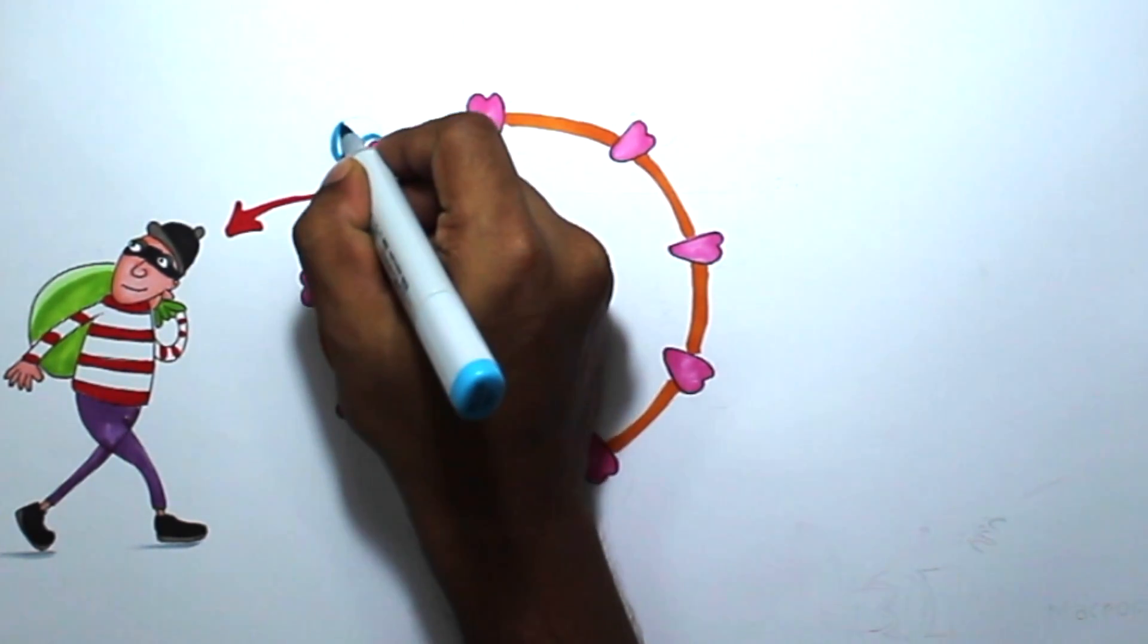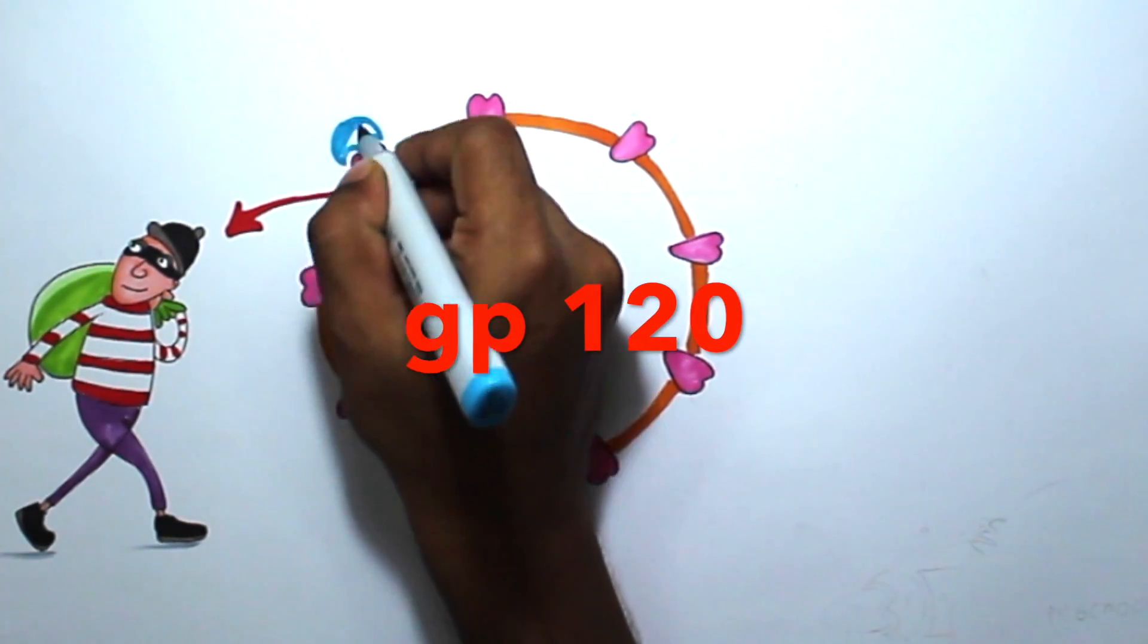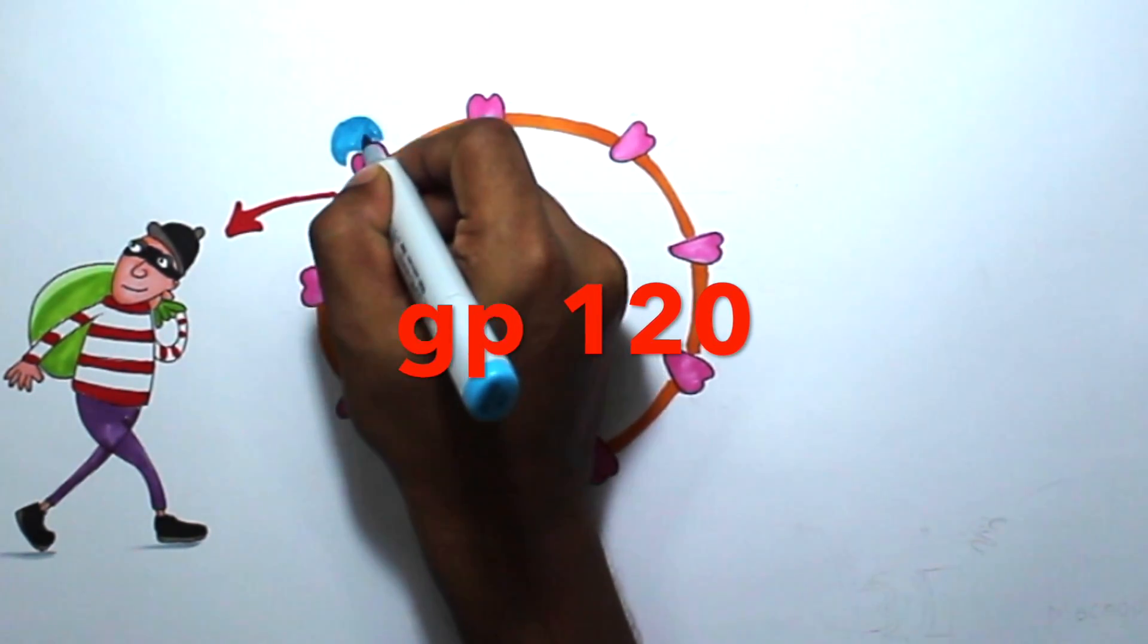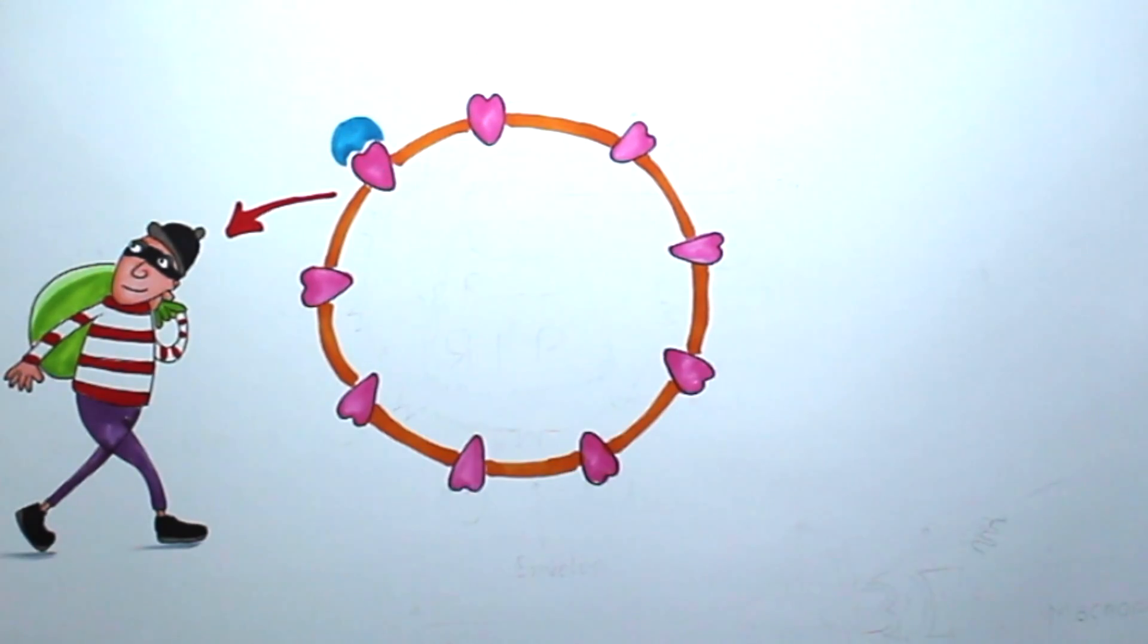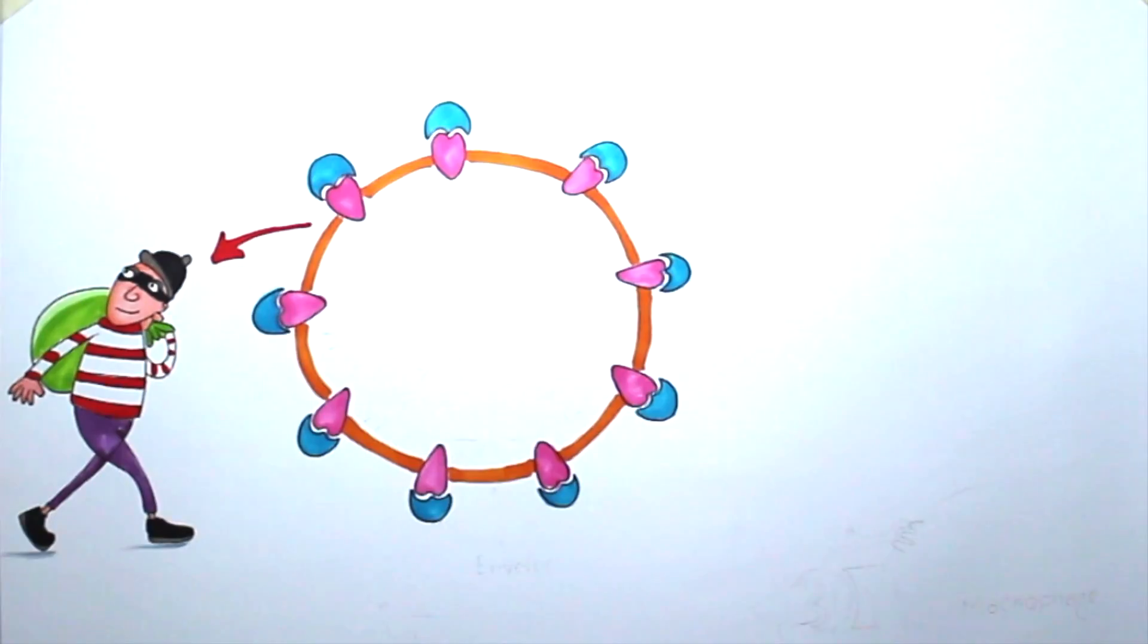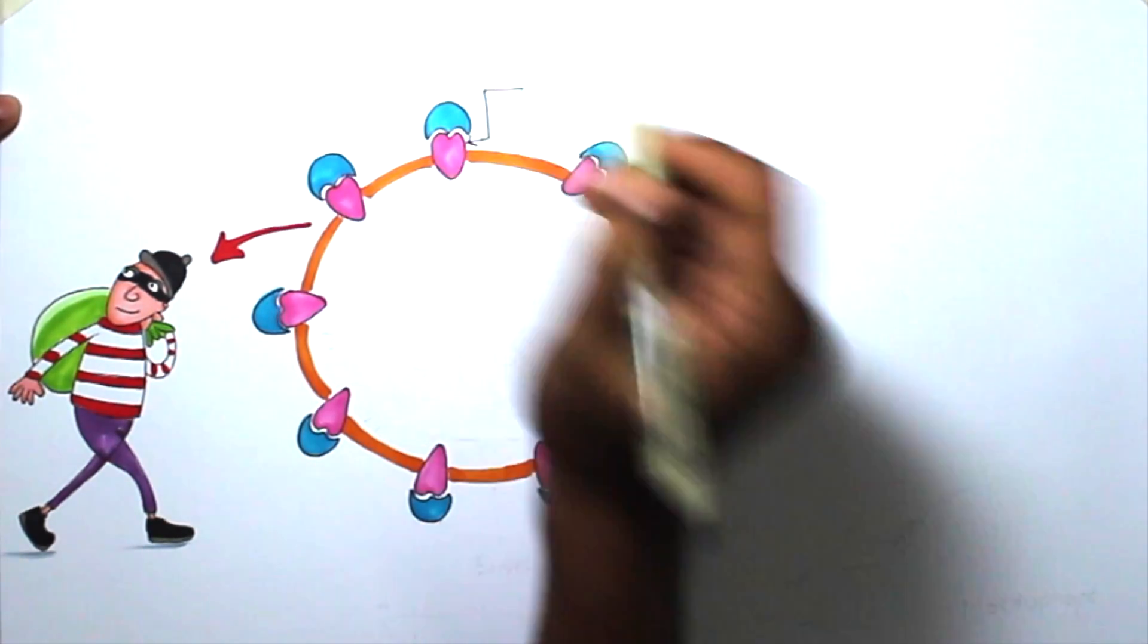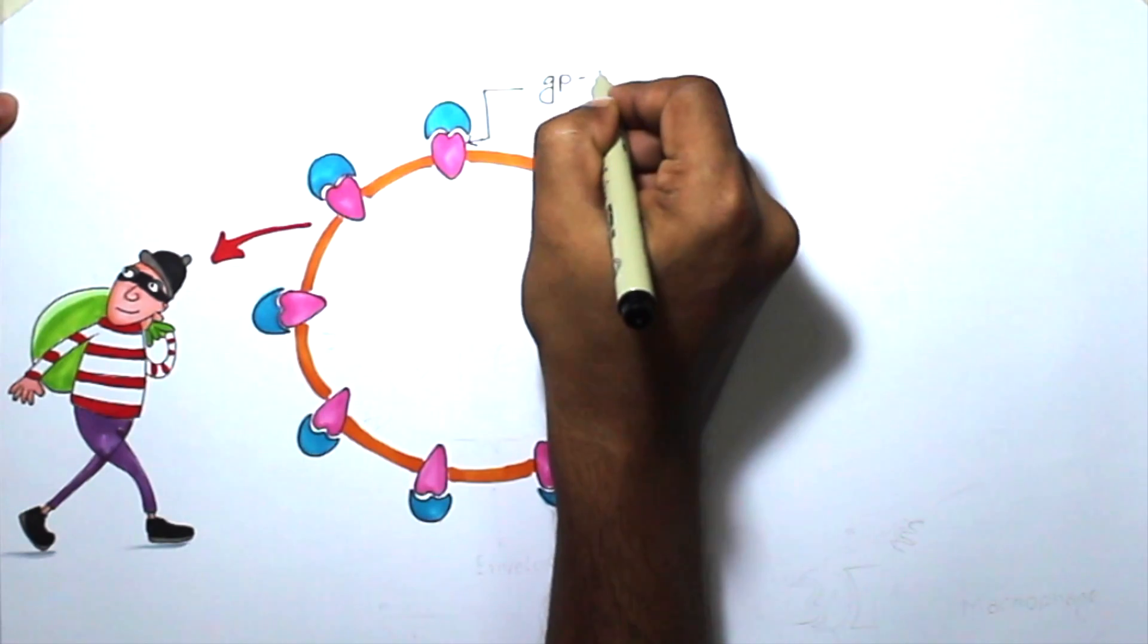GP120 molecule helps in the primary attachment with CD4 molecule, and GP41 helps the virus fuse with the host cell membrane. Here it is, the GP41 molecule. Here, GP stands for glycoprotein, and the number is nothing but molecular weight. And here is the GP120 molecule.